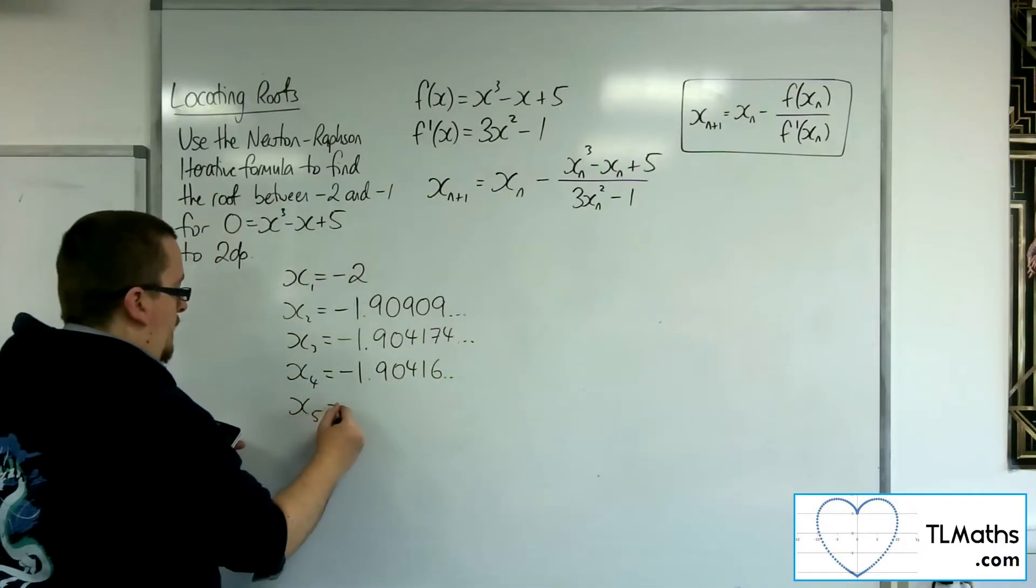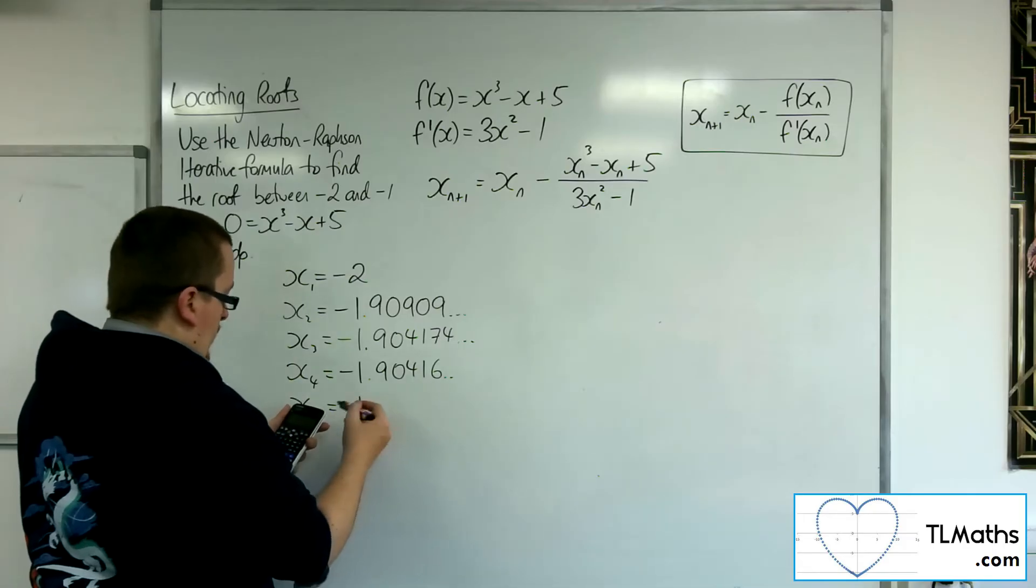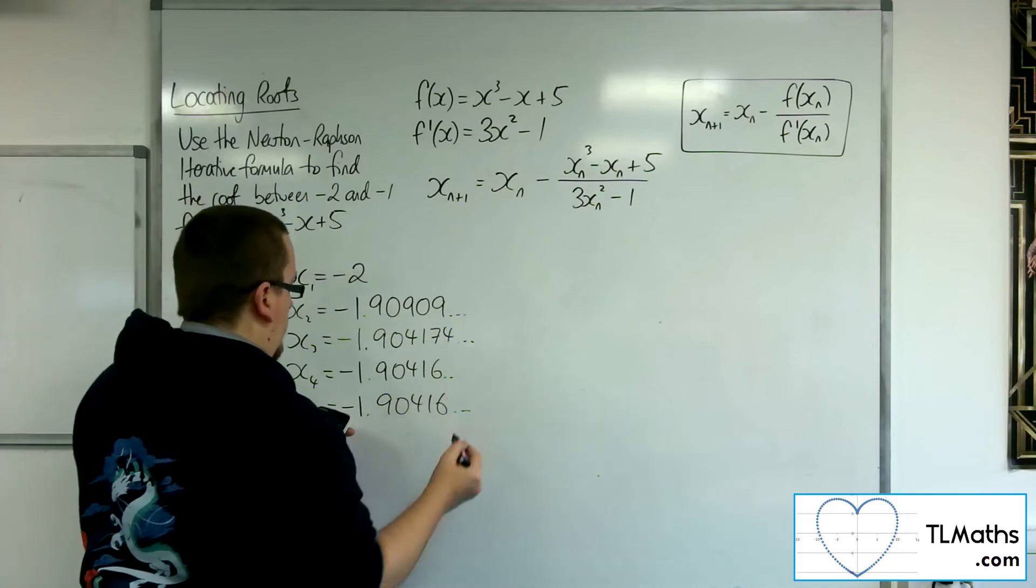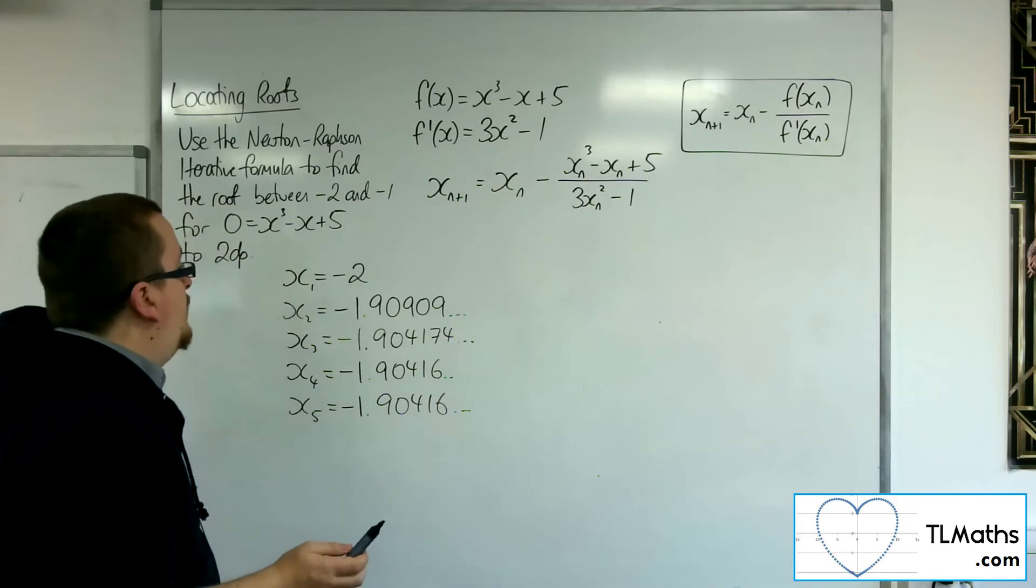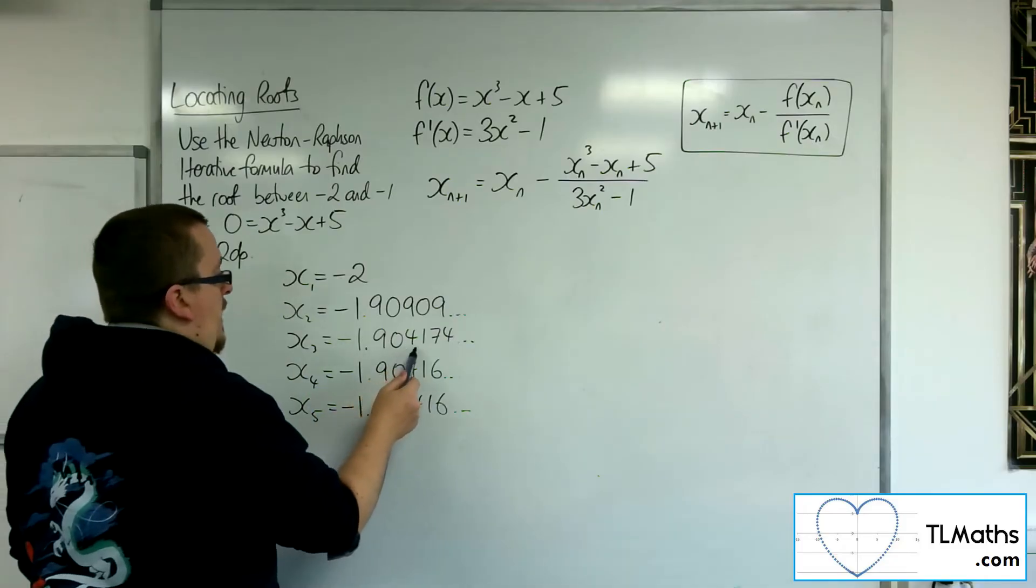I can already see that I've homed in pretty quickly. Pressing equals again, 1.90416. I can see that I've actually homed in very quickly. And at two decimal places, I need agreement to 3. So here is the agreement.